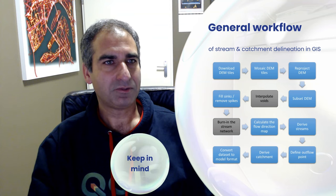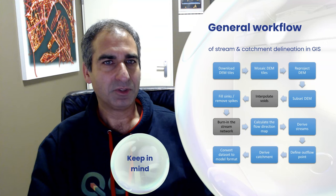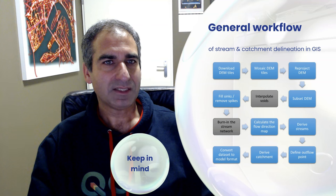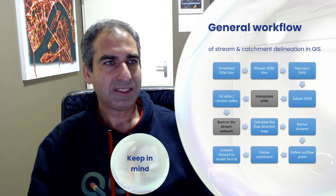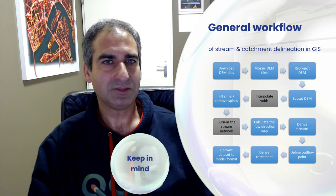Next, you might need to interpolate voids — these are pixels with no data in your DEM. You also need to remove depressions in the DEM that trap the water and prevent it from flowing to the outlet. This can be caused by artifacts in your DEM. They're called sinks and they can be removed with the fill sinks algorithm. If you have a river layer, you can then burn in the stream network to create more realistic results.